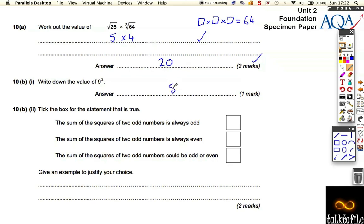The value of 9 squared is just 9 times 9 which is 81. This one's a bit trickier. It asks us for the sum of the squares of two odd numbers, and it wants to tell us whether it's always odd, always even, or whether it could be odd or even.